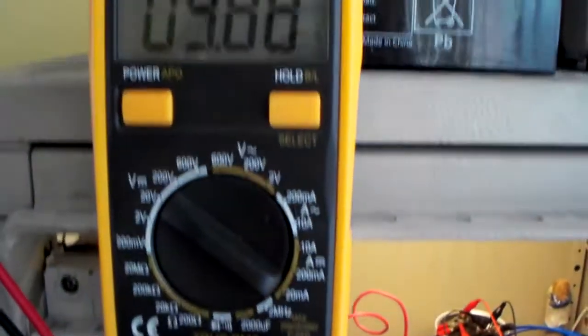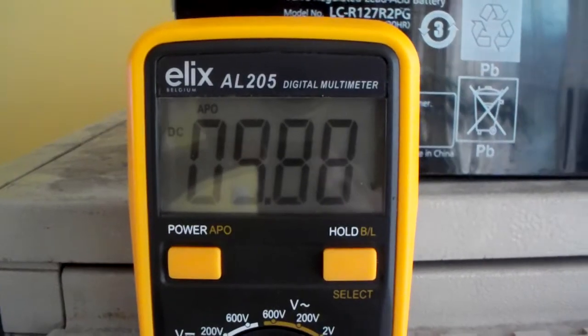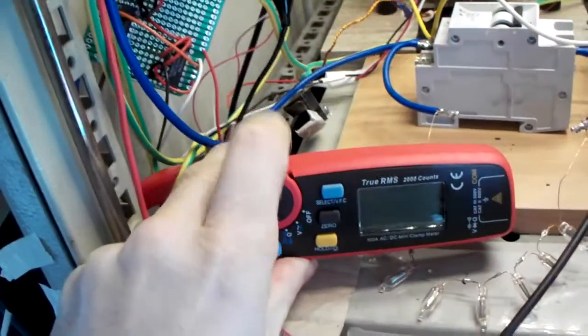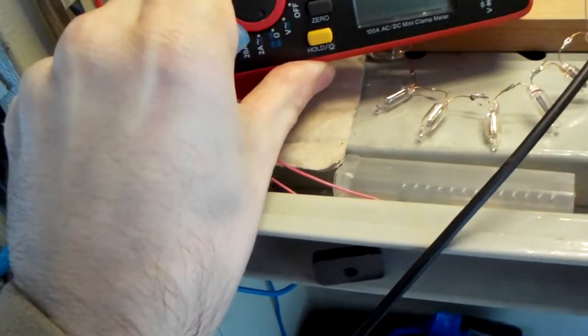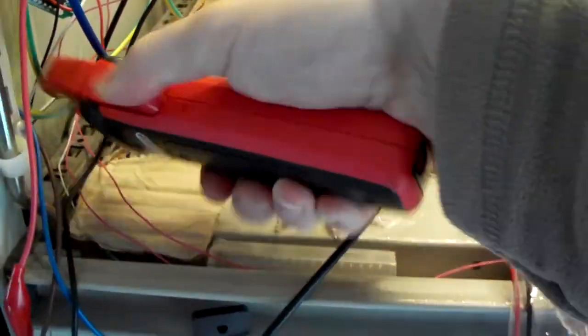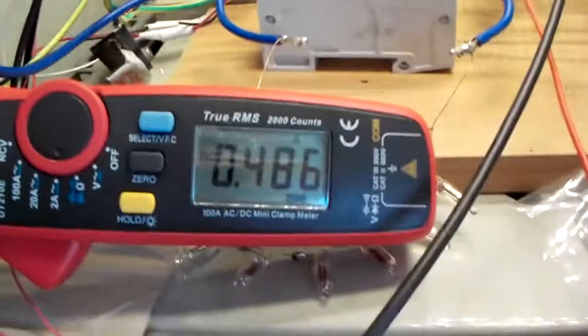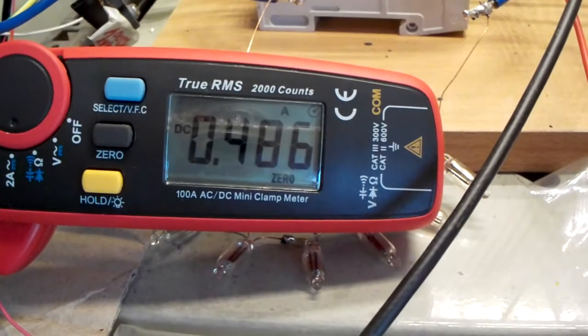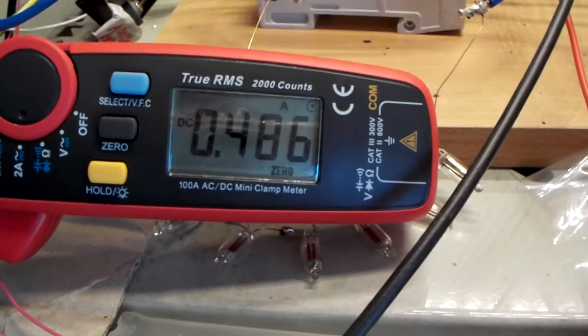So we are now only at a running voltage of 9.8 volts. I have to reset the 10 microfarad capacitor. So we are using 0.486 amps.